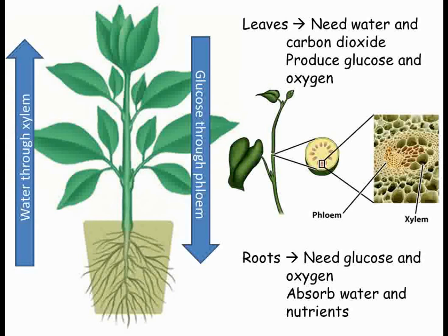Let's think about what a plant actually needs to transport within itself first. The leaves are photosynthesizing, so they need water moved from the soil into the roots and then up the stem to reach the leaves. The parts of the plant that are not photosynthesizing themselves, like the roots, need sugar transported to them so that they are able to respire. The photosynthesizing cells also require carbon dioxide, and need to get rid of the excess oxygen they're producing.